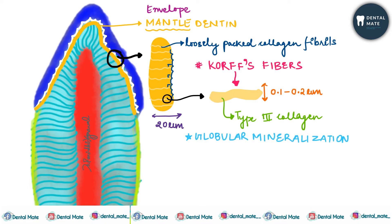Regarding the type of mineralization in mantle dentine: it has fewer defects than the circumpulpal dentine. Matrix vesicles are involved in the mineralization of mantle dentine, and thus globular type of mineralization takes place.